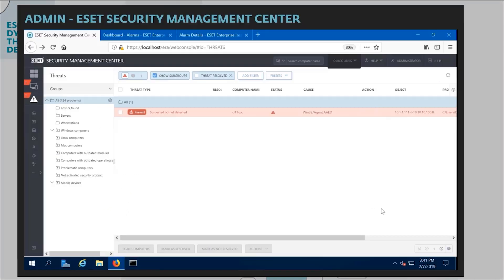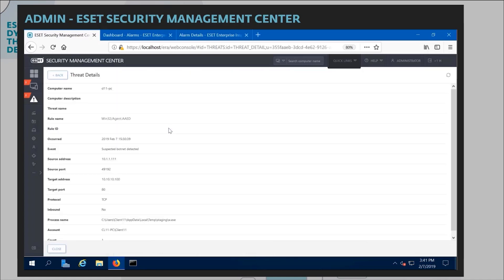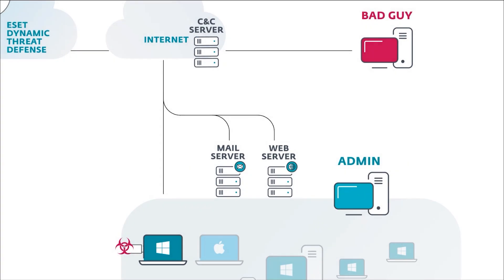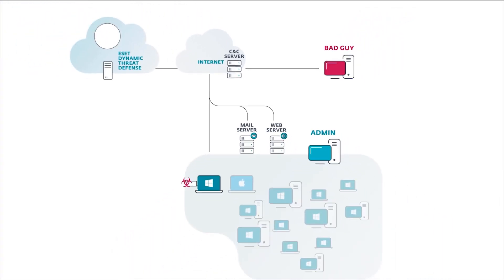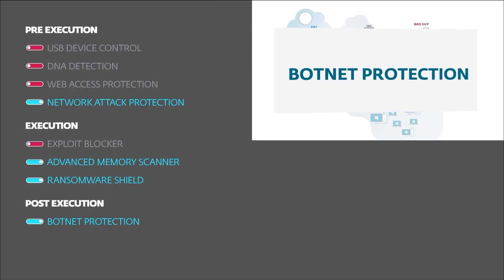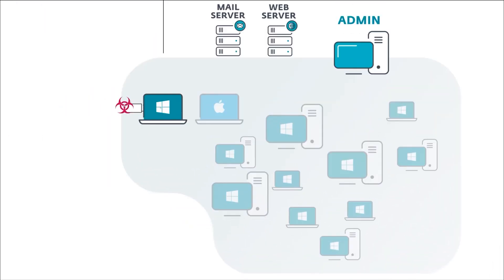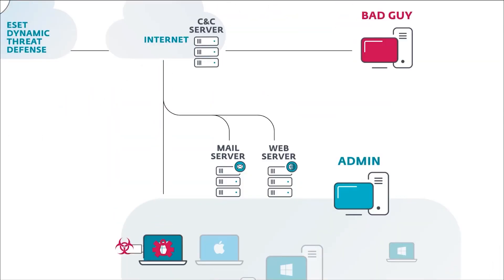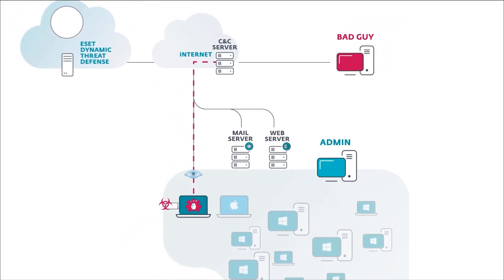Further details are visible in the administrator's console, along with the computer name and the source and destination IP addresses and ports of the attempted botnet communication. If the botnet protection layer hadn't blocked that communication, the malware would download additional components. The first component, which we've seen attackers use for network reconnaissance before lateral movement, is NMAP.